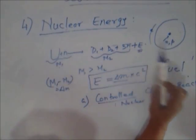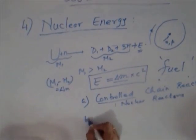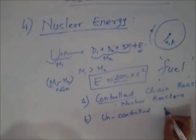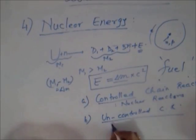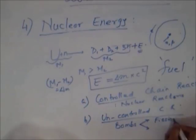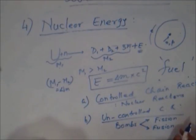Nuclear energy converts into heat, and heat energy converts into electrical energy in a nuclear reactor. But there is also an uncontrolled chain reaction, seen in nuclear bombs. These bombs are based on two kinds of scientific processes: one is fission, and the other is nuclear fusion, which I will explain in a moment.